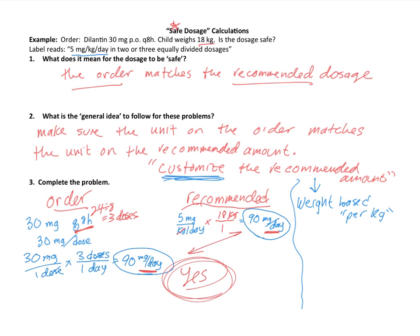So let's take a step back. The general idea in these problems is we need to compare the order, what we would be actually administering, with what is recommended for this patient. But what's recommended is typically given to us in a different unit. And most of the time, it's weight-based.